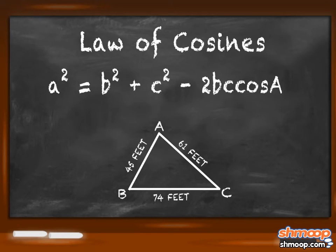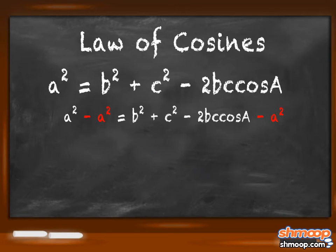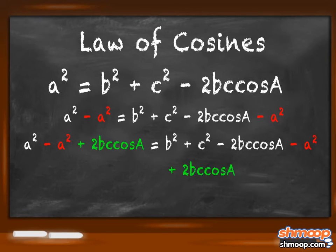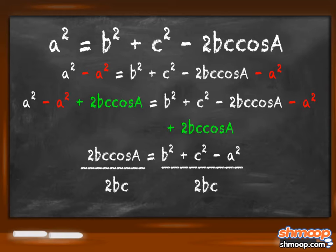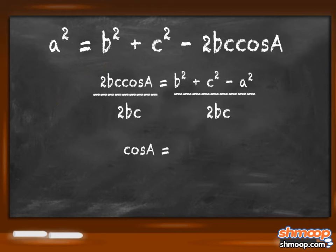Before we plug in all the values we know, let's isolate what we're solving for, and that's the angle a. Subtract a squared and add 2bc cosine a to both sides of the equation to get 2bc cosine a equals b squared plus c squared minus a squared. Then divide both sides by 2bc to get cosine a equals b squared plus c squared minus a squared all over 2bc.